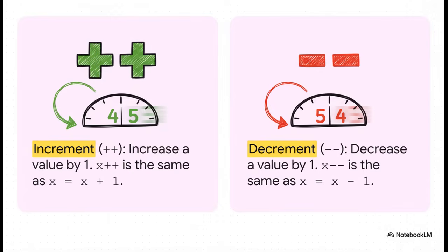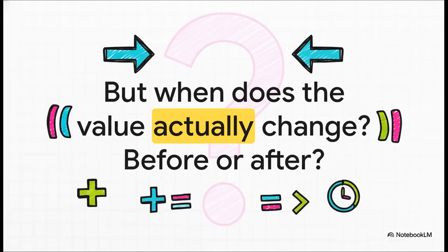And of course, the double minus, minus minus, does the exact opposite. It decreases a value by one. Now this seems super simple, but here comes the twist. And it's a detail that trips up beginners, and let's be honest, even experienced programmers sometimes. When you use plus plus or minus minus, does the value change before the line of code is finished or after? Well, the answer actually depends on where you put the operator.